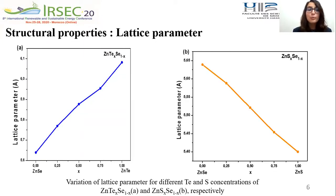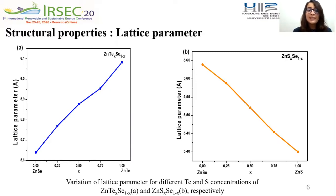For the structural properties, the volume optimization was performed by minimizing the total energy using the Birch-Murnaghan equation of state. Our calculations show that the lattice parameter for ZnTe-Se alloy increases with the increase of Te concentration, from 5.64 to 6.08 Ångström. For ZnS-Se, the lattice parameter decreases with the increase of S concentration, from 5.64 to 5.4 Ångström. This is due to the difference between the atomic radii of Te, S, and Se.